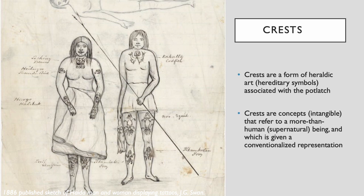Crests are a form of heraldic art closely associated with the potlatch system. They are closely guarded possessions — the legacy of the ancestors — acquired from supernatural encounters with animals, supernatural beings, or events. Crests are to be held in perpetuity by the descendants of the ancestors who acquired them, so to display the crest of another group is an insult to the integrity and identity of that group. A totem pole is a good example of crest art for northern groups, as are Haida tattoos, as seen in this drawing from the 1870s.